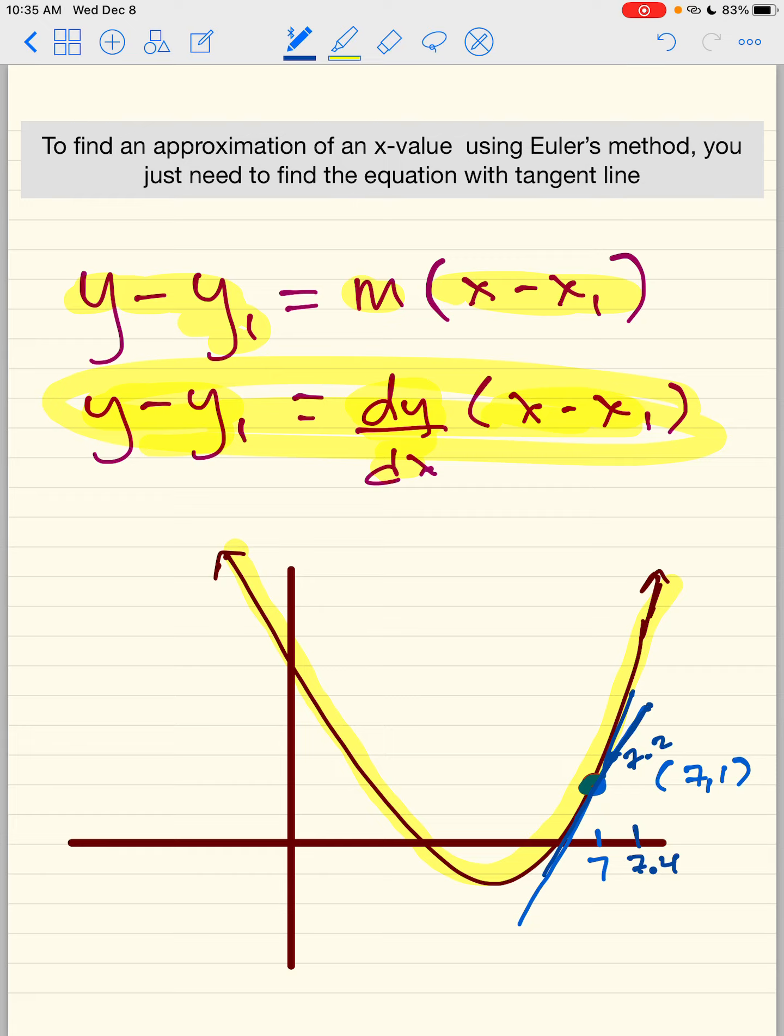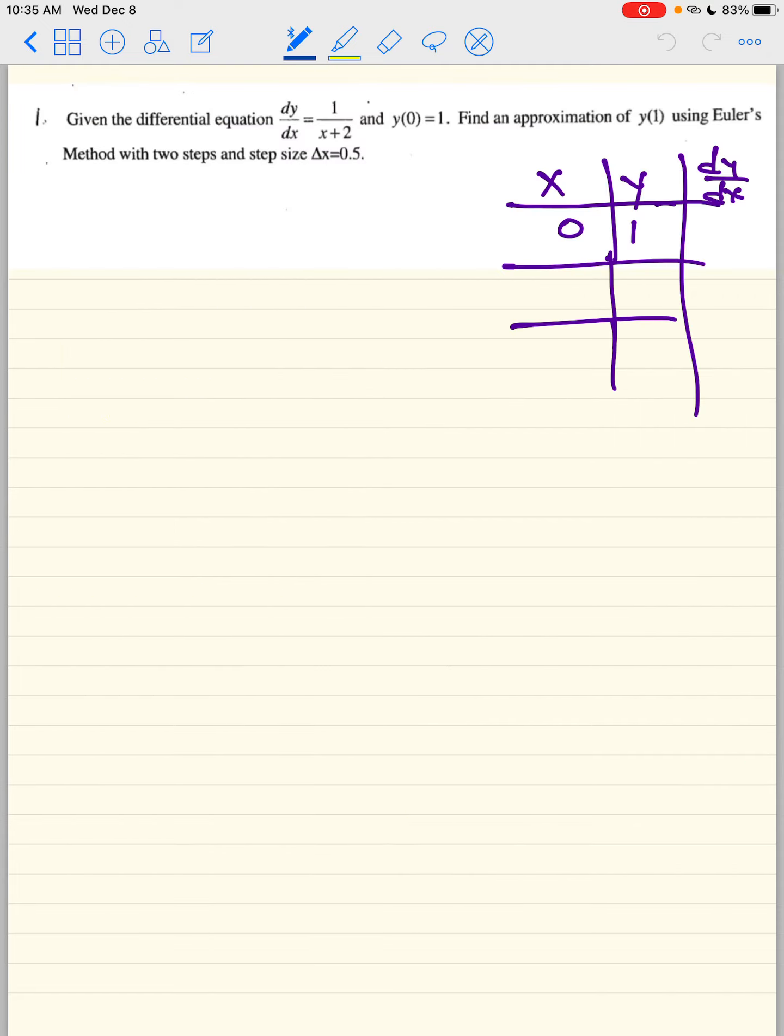The reason why is because the tangent line only touches once, and so as you start moving away from that point, it doesn't become as approximate as it would if you find another point. So this is actually very simple. So let me show you what to do.